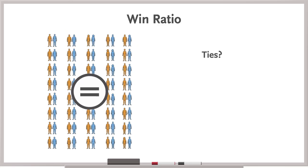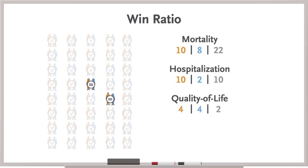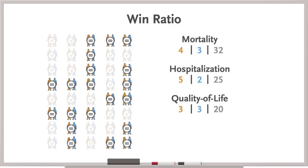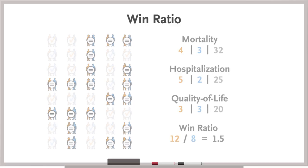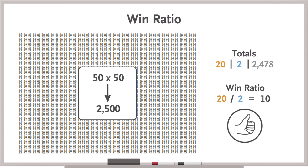Third, what about those ties? Ties don't contribute to win-ratios. This isn't a major issue if there aren't many. In your trial, only 5% of participants remain tied after analyzing the third outcome. But imagine if 50% of participants had remained tied — that would be a lot of data not contributing to the win-ratio, and this risks overestimating the treatment effect. For example, if compared with placebo a new drug has 20 wins, 2 losses, and 2,478 ties, the win-ratio would be 10. Sounds dramatically positive, but that measure alone clearly obscures how many patients didn't seem to benefit at all.